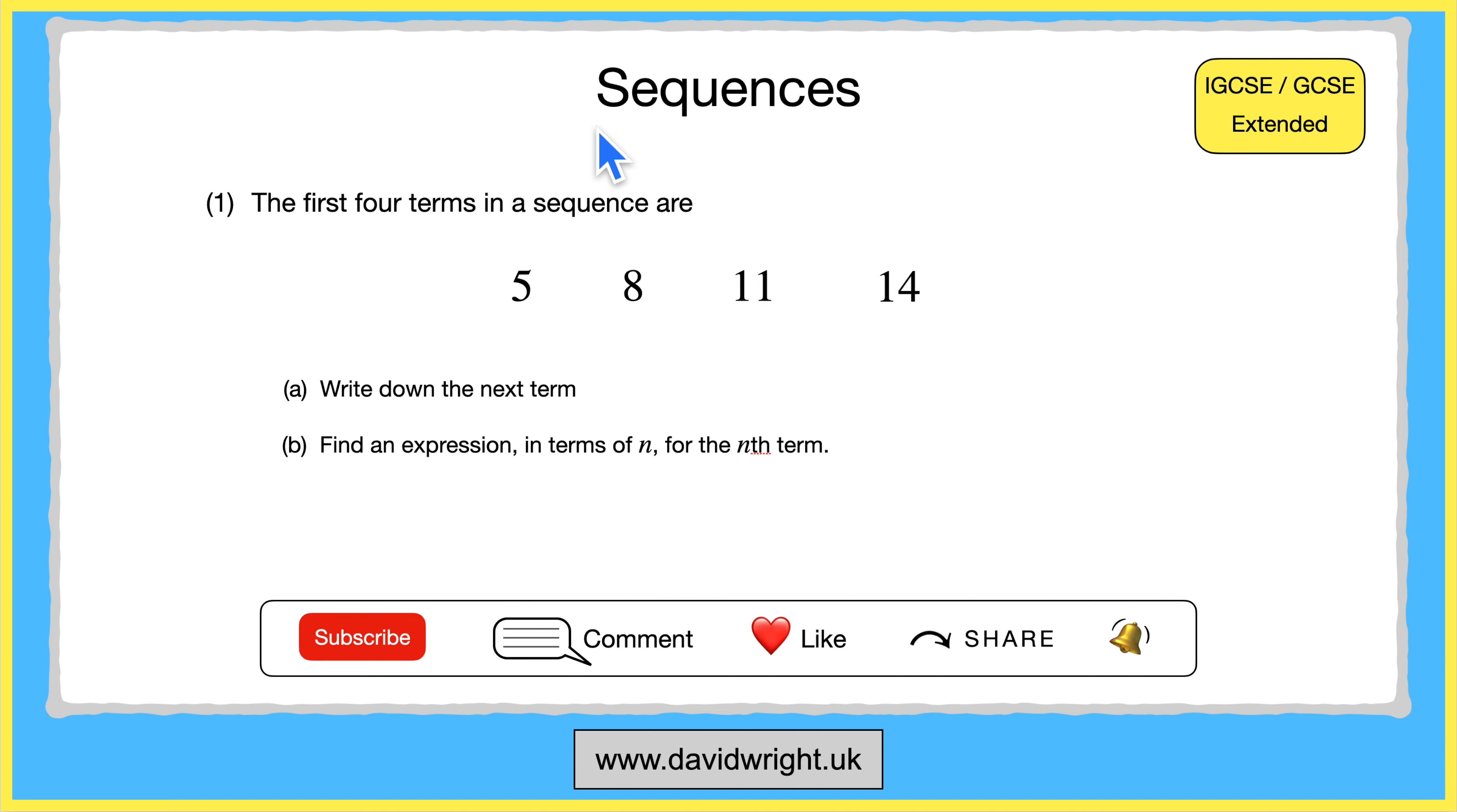In this video we are going to answer a typical exam question about sequences. We are given the following sequence 5, 8, 11, 14 which is a list of numbers that are increasing in size and we are firstly asked to write down the next term in the sequence.